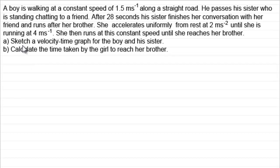What I want you to do is sketch a velocity time graph for the boy and his sister and then calculate the time taken by the girl to reach her brother. OK, well let's just see how we would do this. We'll have to draw a sketch. So let's just have the vertical axis, we'll have that as v, measured in meters per second. And we've got our horizontal axis here for time t, measured in seconds. Make sure you always label your axes.